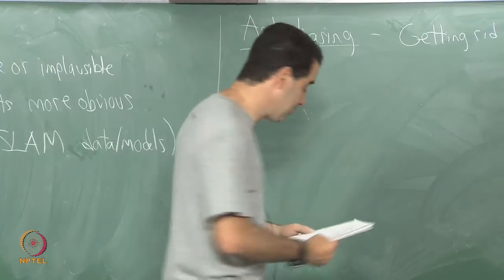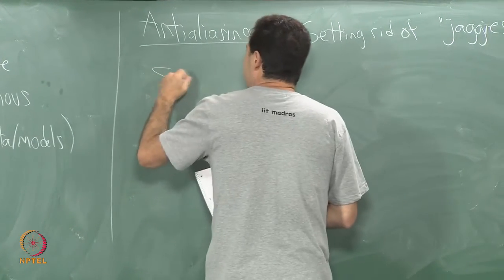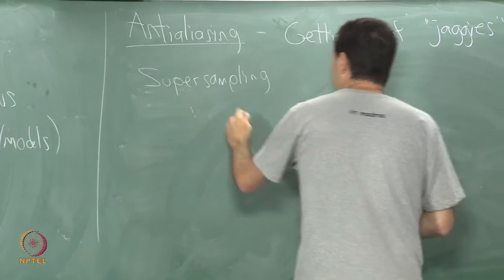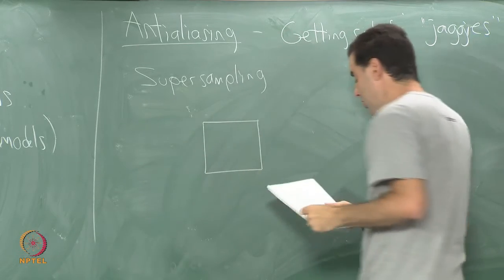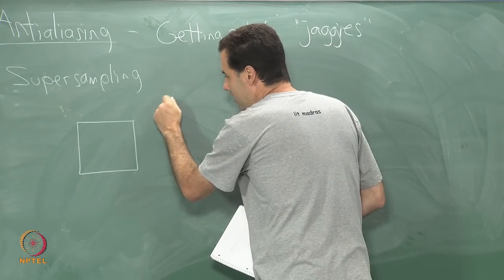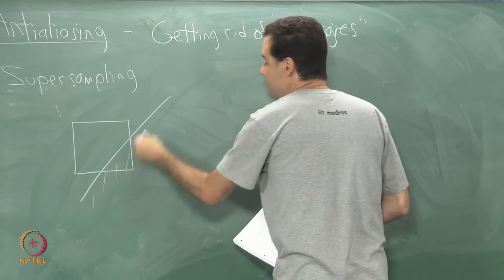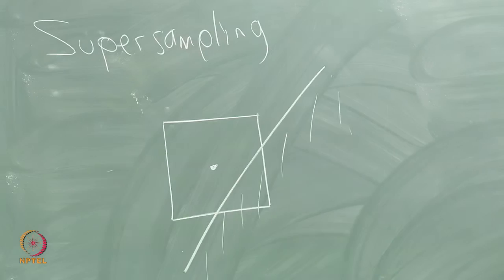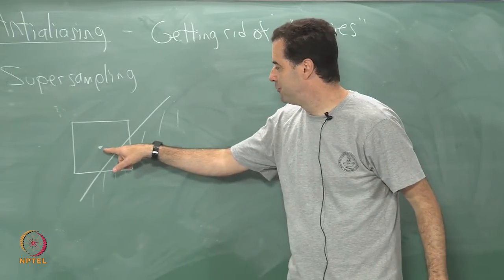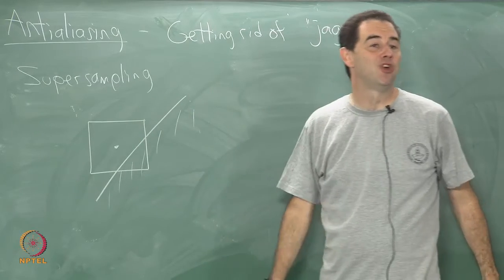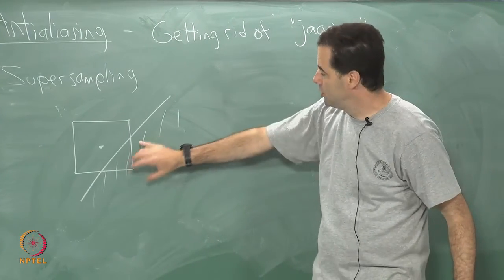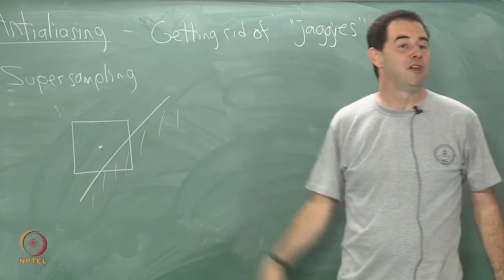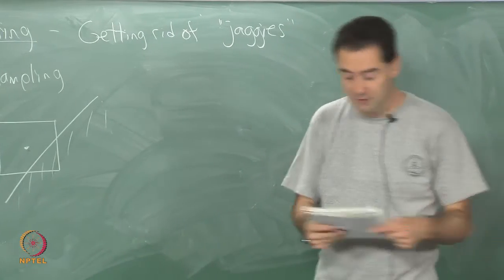The most common method is super sampling. In the standard method we have a pixel and we sample at one place to determine whether it falls inside or outside of the triangle — a binary decision. That gives us either fully rendered or not for that pixel.